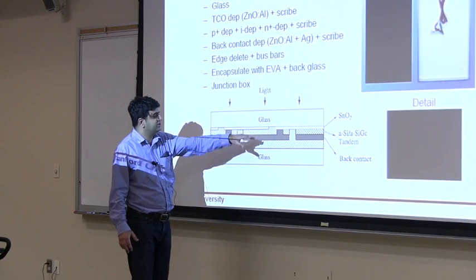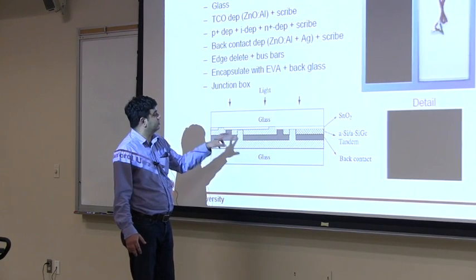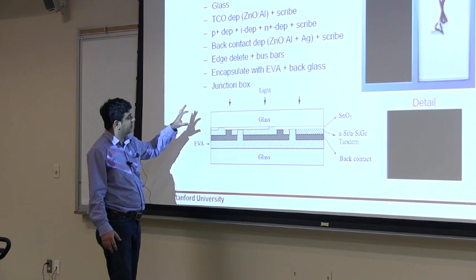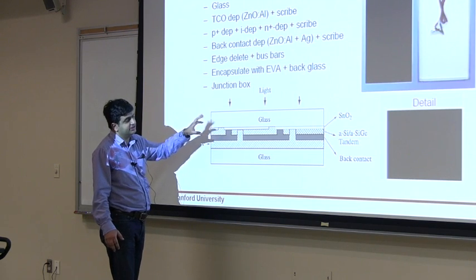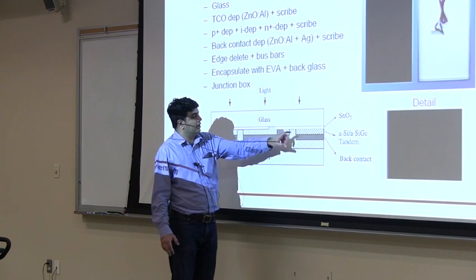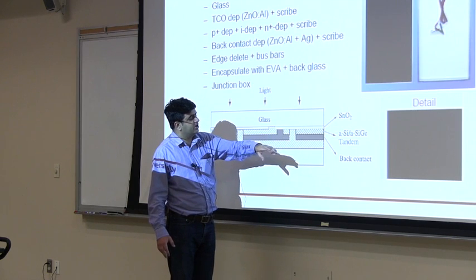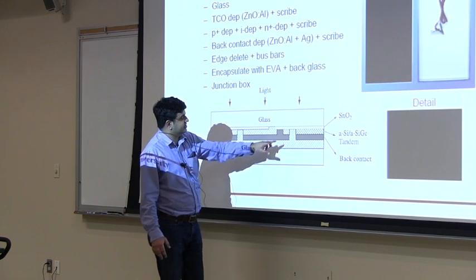Once you deposit it, you pattern it by using this laser scribe. And then when you're done depositing your other layers, in this case this is an amorphous silicon cell, you again deposit your amorphous silicon and then deposit your back contact. Then again you do a laser scribe.